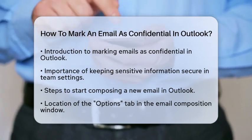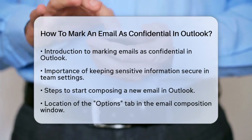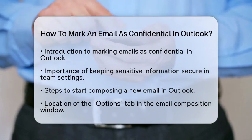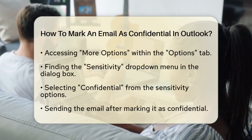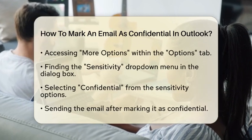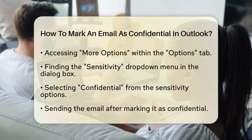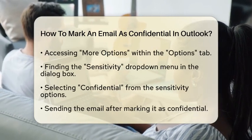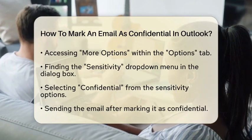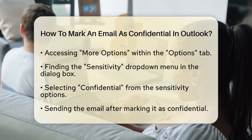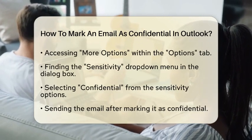Next, click on More Options within the Options tab. A dialog box will pop up, allowing you to adjust the properties of your email. Here, you will find a drop-down menu labeled Sensitivity. Click on this menu and select Confidential from the available options.